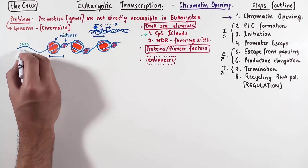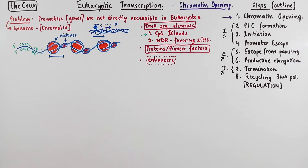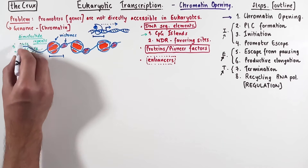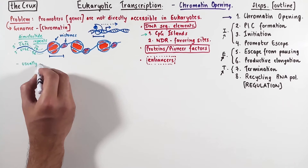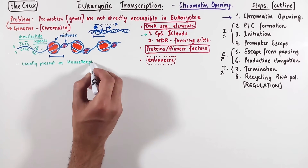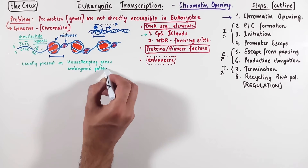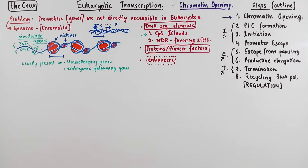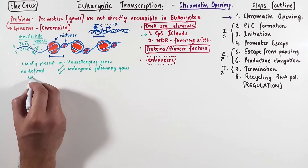CpG islands are long stretches, usually a few kilobases, of CpG dinucleotide repeats — they're repeat elements. We call them islands because they're dispersed throughout an entire region in small patches. Their location typically overlaps with the promoters. A quick fact: while 70% of promoters in humans are CpG islands, they are more common in housekeeping genes like the polymerases and actin. They're also common in various developmental genes, which correlates with the fact that these types of genes don't have typical promoter consensus sequences like TATA boxes or initiators.